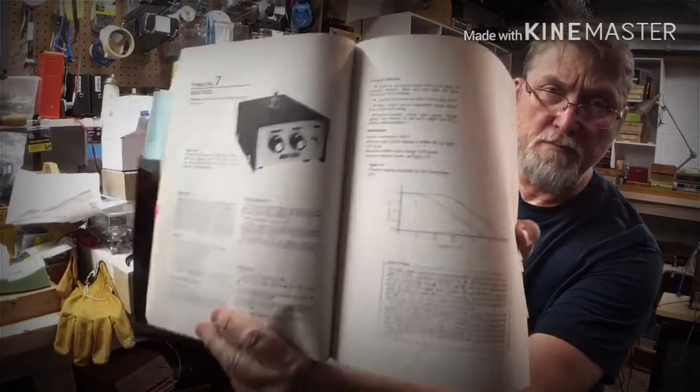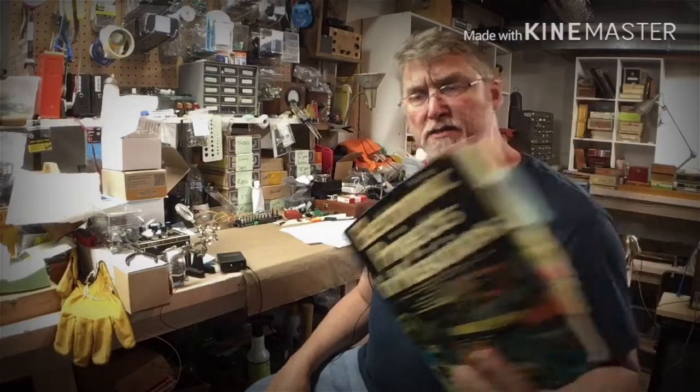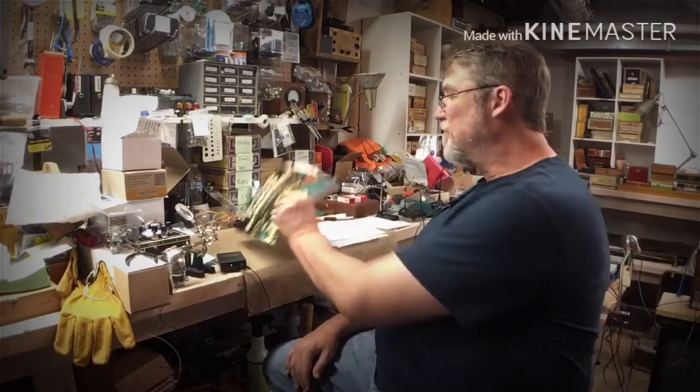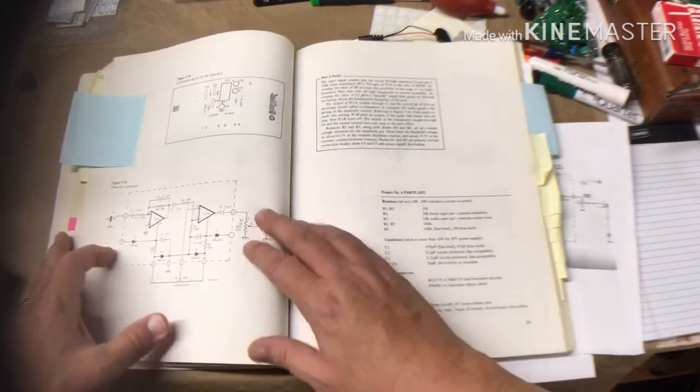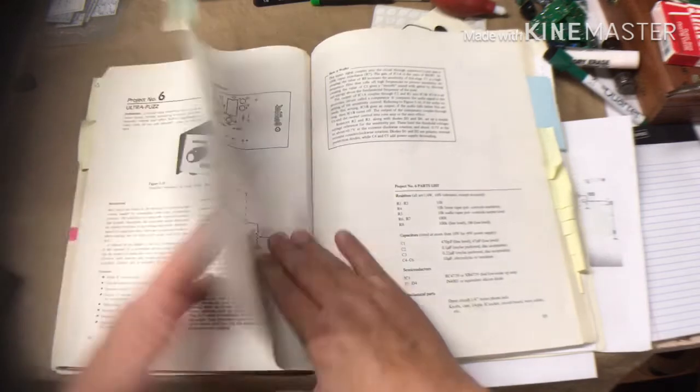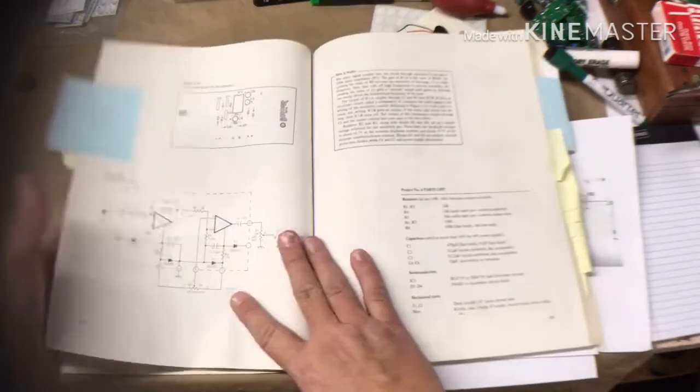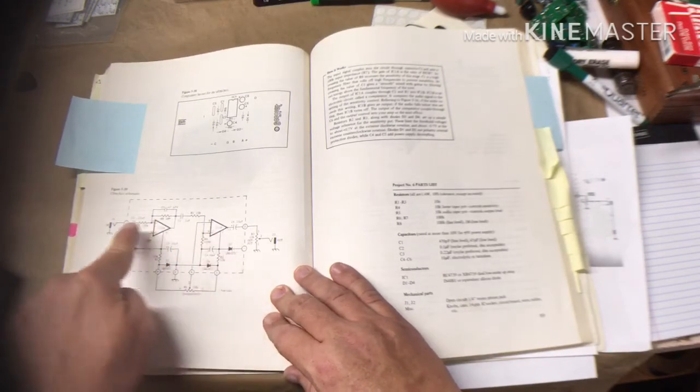So let's go over to the bench and take a look at the schematics and see what we can come up with for a combined project. Back over here on the bench, I'm taking a look at the schematic for project 6, the ultra fuzz. It's a dual op-amp circuit where we have one amplifier driving a second.